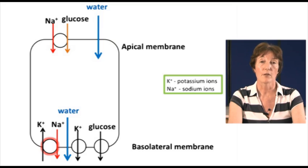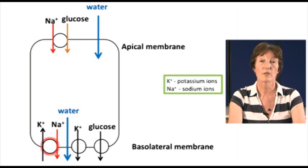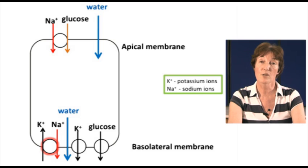So now we have to think about what happens to the water. As the sodium and glucose are drawn into the cell, this makes the water potential inside the cell more negative. And so water is also drawn across the apical membrane from the gut by osmosis, down the water potential gradient that has been created. We're talking about serious amounts of water — the human small intestine absorbs about 8 litres per day.